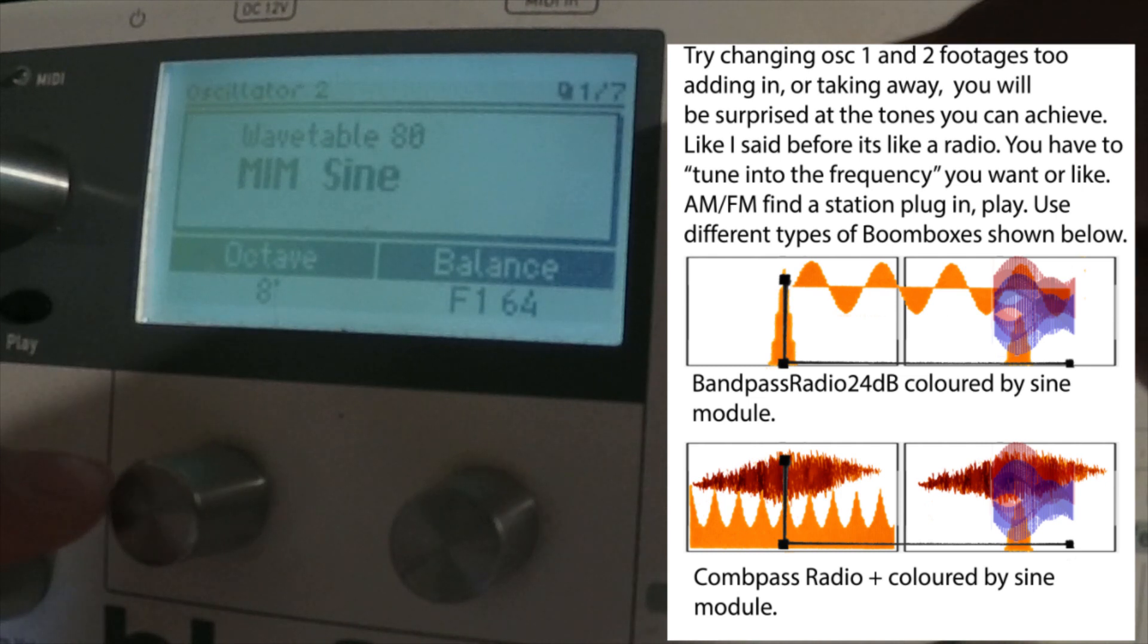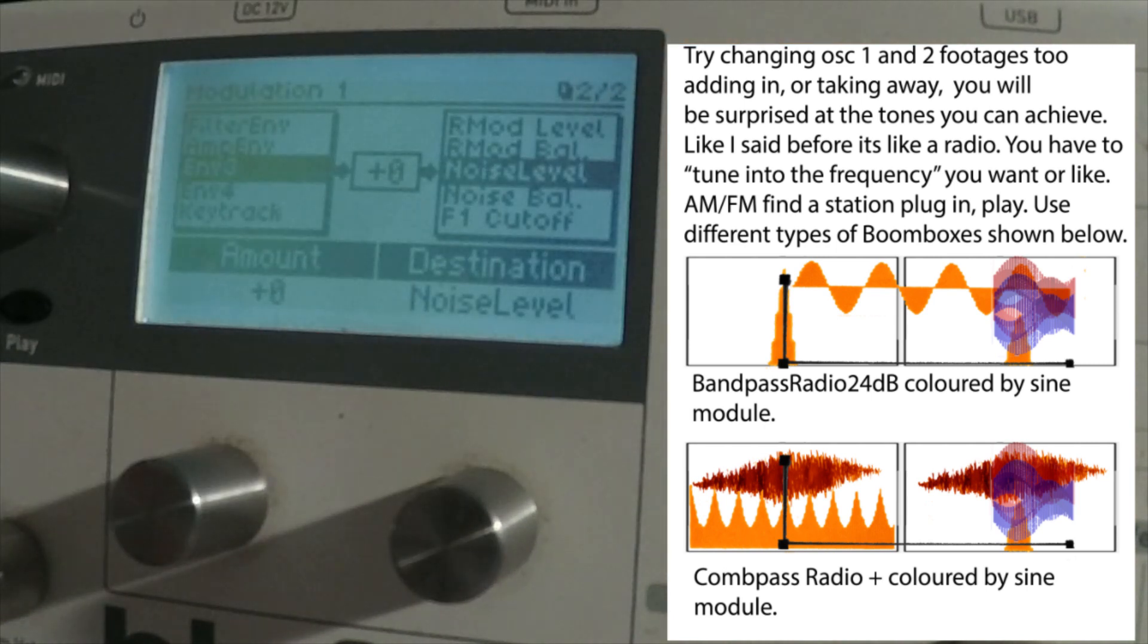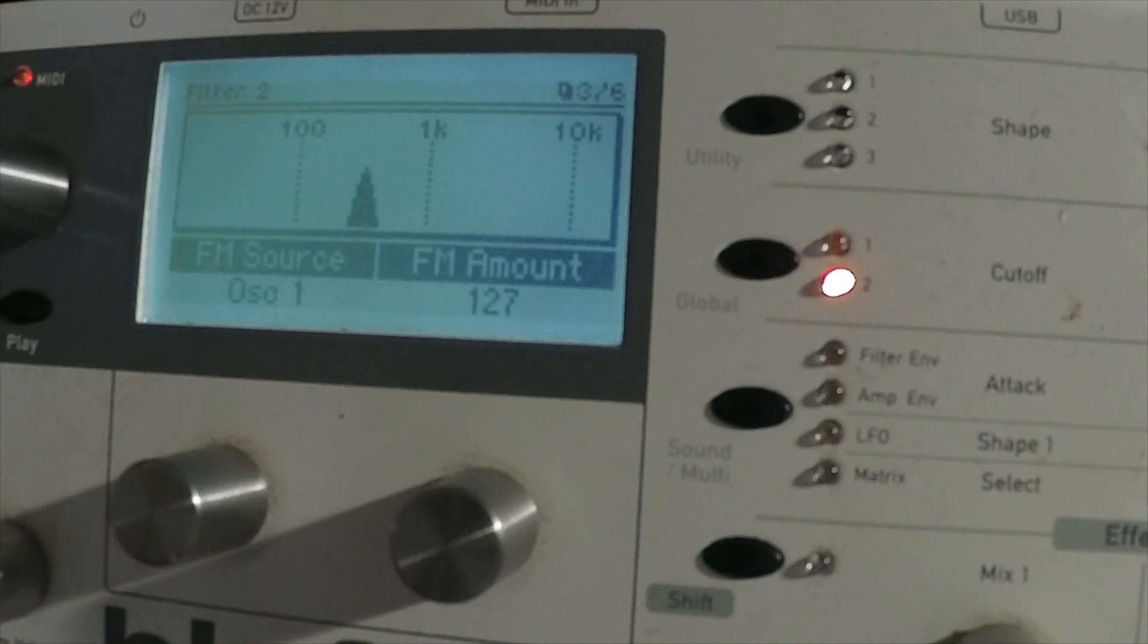Module 2 is in effect because module 1 is plugged into module 2, which would be oscillator 1. FM source oscillator 2, it's the plug-in cable.